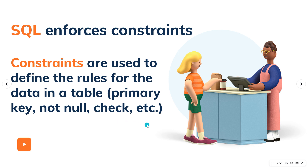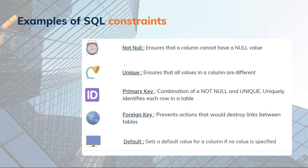Let's look at some of these constraints. NOT NULL ensures a column cannot have a null value. UNIQUE ensures all values in a column are different. PRIMARY KEY is a combination of NOT NULL and UNIQUE — it uniquely identifies each row. FOREIGN KEY prevents actions that would destroy links between tables. DEFAULT sets a default value for a column if no value is specified.